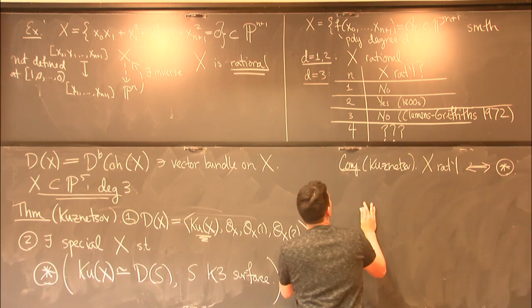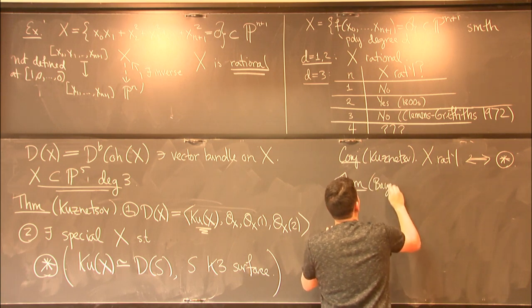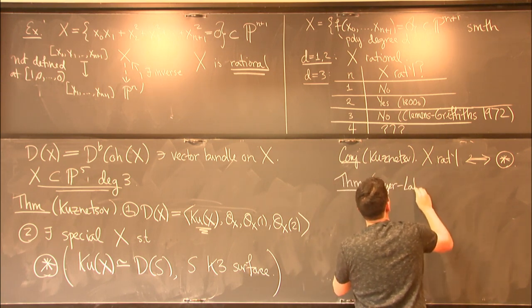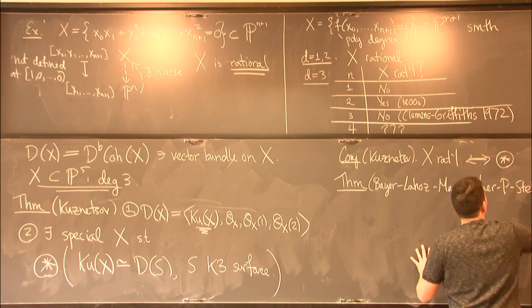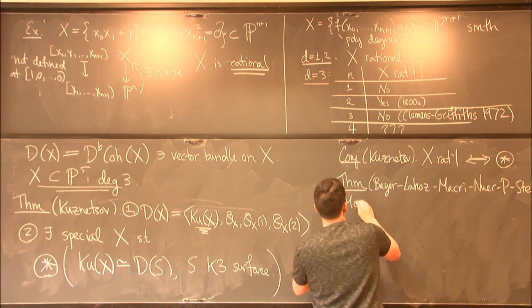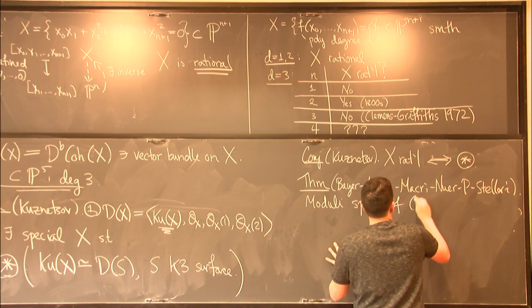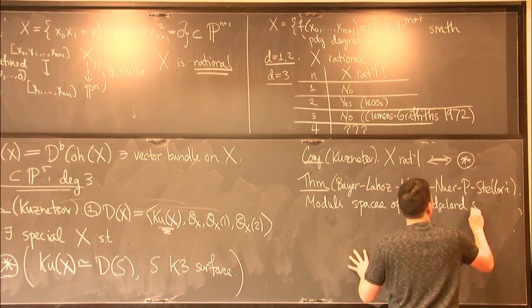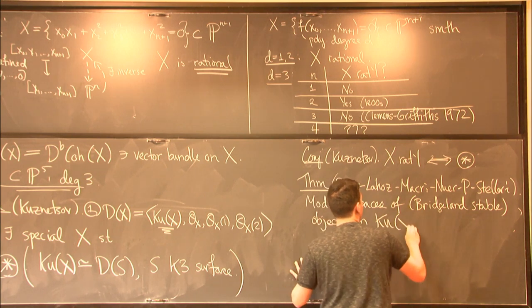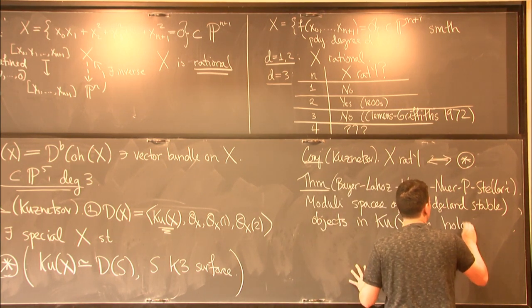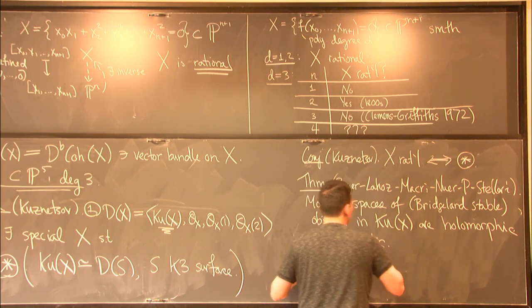So this next theorem that I'll tell you relates this category to the construction of holomorphic symplectic varieties. So this is part of a project with a couple people. So Bayer, Lahoz, Macrì, Nuer, and Stellari. So what we showed, roughly what we showed is that moduli spaces of objects in this category, or more precisely of Bridgeland stable objects in this category, Q of x, are holomorphic symplectic varieties. OK.